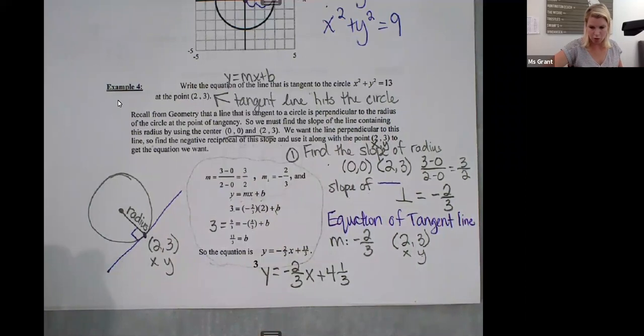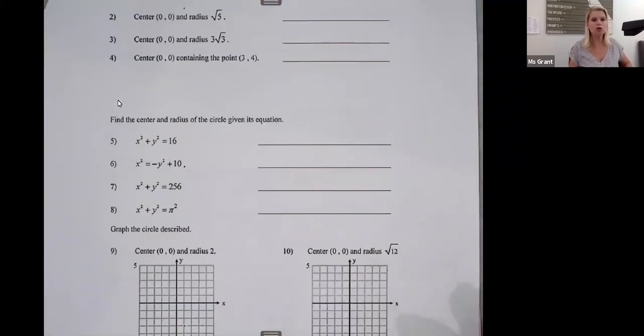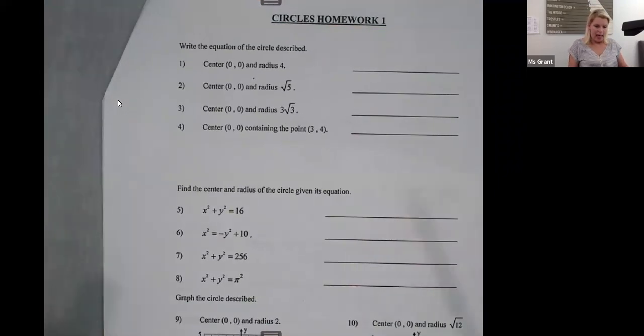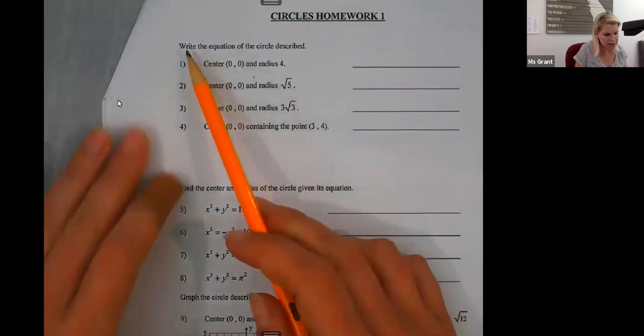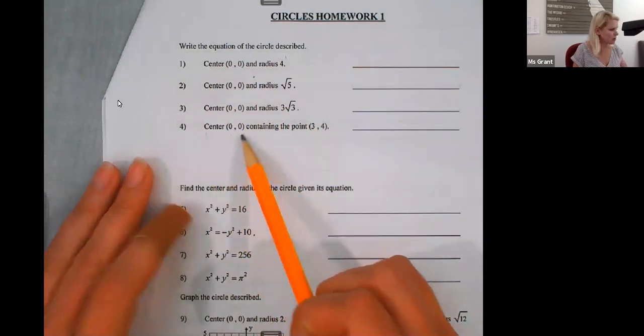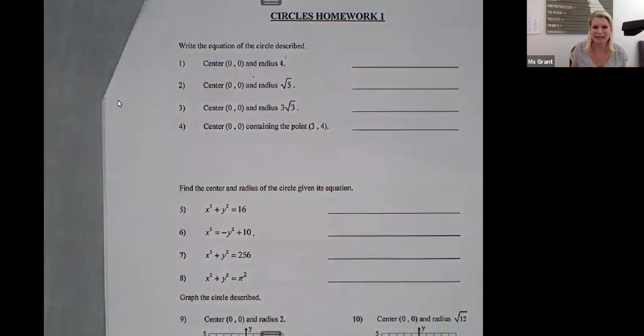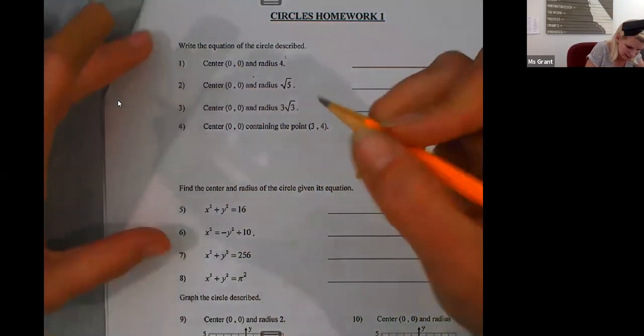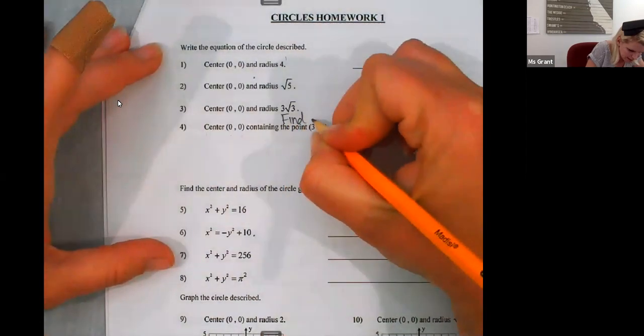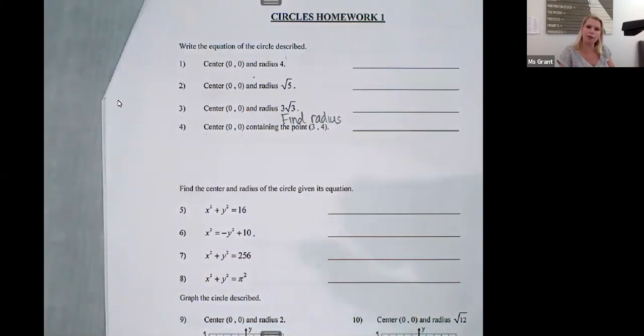I'm now going to turn the page. Your homework is on the back side. It's this page right here. Circles homework 1. I think everything is pretty self-explanatory and you can do it except for number 4. Let's look at number 4. The directions say write the equation of the circle described. And number 4 gives me a center and a point. This doesn't give me the radius. I have to find the radius. How do I find the radius if I'm only given the center and a point on the circle?